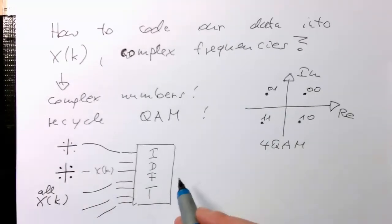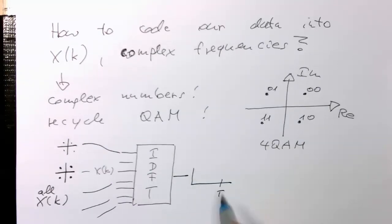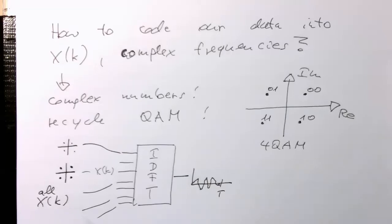And then obviously the output is our symbol then, which is having all the information of all these QAM inputs here. So that's again a very simple and ingenious idea. And we can directly recycle our previous concepts.